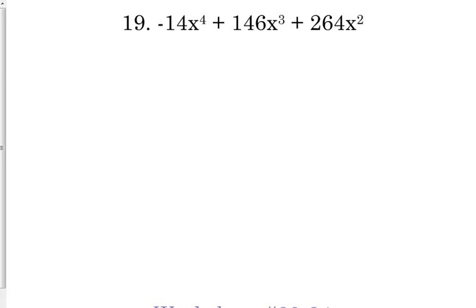But this one starts with x to the fourth. So that's dead giveaway number one. So when we look at all three of our terms, they all have at least x squared. So that's going to be part of our GCF. And then the other thing that kind of gives it away is that this leading coefficient is negative. We don't like to factor when the leading coefficient is negative. So we're at least going to take a negative one out of this equation, hopefully something more.